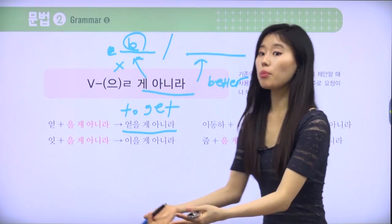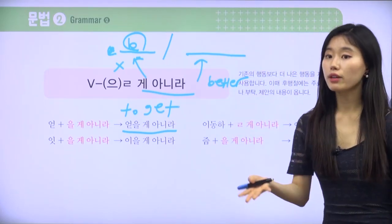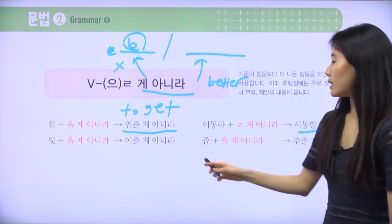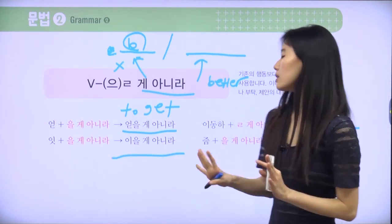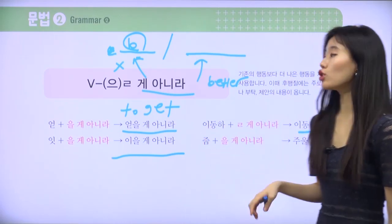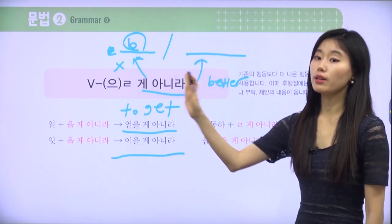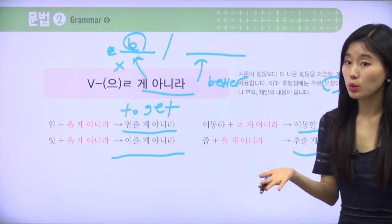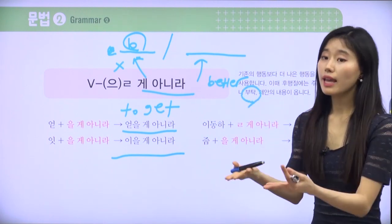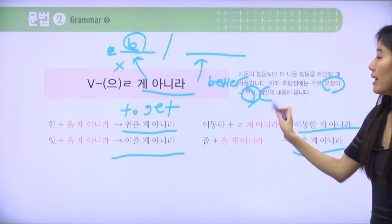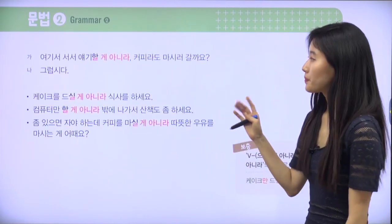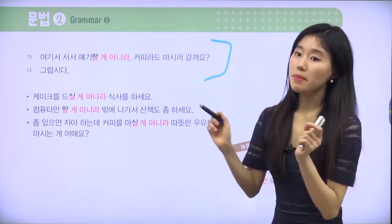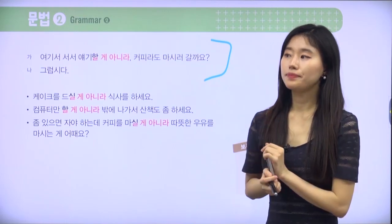얻을 게 아니라 딴 거를 해보세요. 이동할 게 아니라 — don't move like that. 이을 게 아니라 — 잇다 means to connect. 주울 게 아니라 — 줍다 means to pick up. Additionally, this grammar can also express a request, a favor, or a suggestion. Let's take a look at more examples.